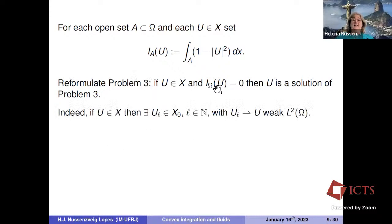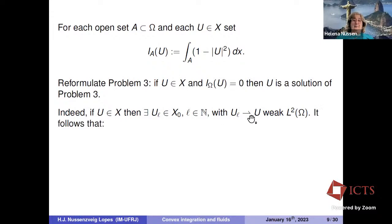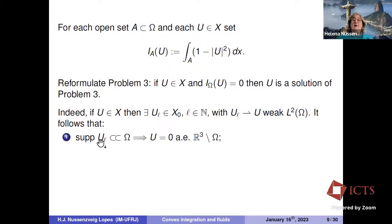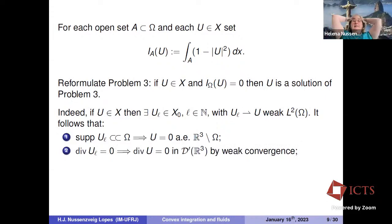To see that finding u in X with I_omega(u) = 0 is enough: since X is the closure of X-naught, there is a sequence of vector fields u_l in X-naught converging weakly to u. Since all u_l are smooth, compactly supported inside omega, u is zero outside of omega almost everywhere. Since u_l is divergence-free classically, and divergence is a linear operator, this is preserved by weak convergence in D', so the divergence of u is also zero. Since u_l is bounded by one for all l, this is preserved by weak convergence, so u is bounded by one.